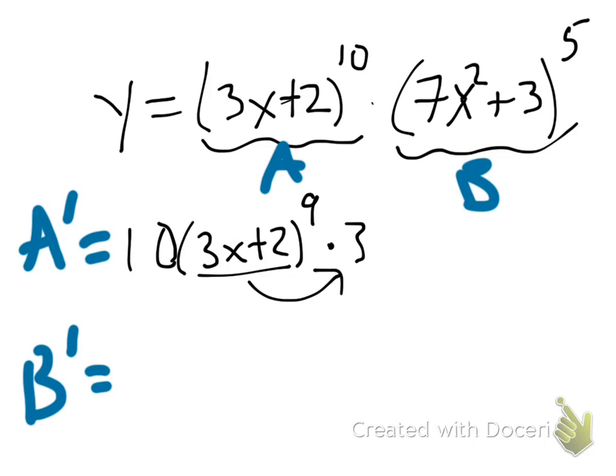Likewise, my B prime is 5, 7x squared plus 3 to the 4th times 14x for the chain rule. And the 3 becomes 0, just like the 2 did on A prime.